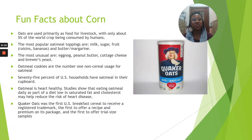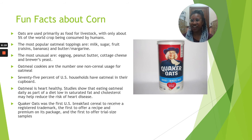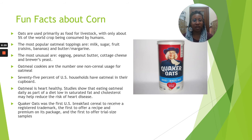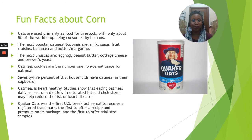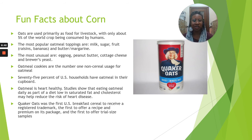As always, I'd like to finish with a couple of fun facts about oats — and this should say oats, not corn; I apologize, that was the previous topic. Oats are used primarily as food for livestock, with only about 5% of the world crop being used for human consumption. The most popular oatmeal toppings are milk, sugar, fruit such as raisins and bananas, and butter or margarine. The most unusual are eggnog, peanut butter, and cottage cheese.